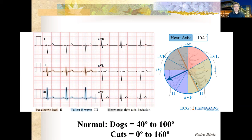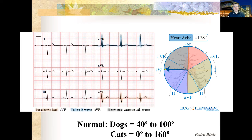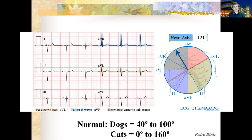When I reach 90 degrees from Lead II, that lead becomes isoelectric — meaning equal amounts of deflection up and down — because I'm 90 degrees from that angle and can't tell if the wave is coming toward or away from it. As I move even further away, Lead II becomes very negative, which could indicate deviation toward the right side of the heart.